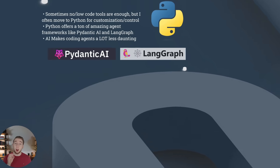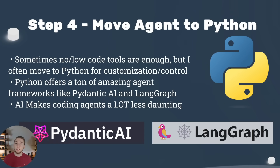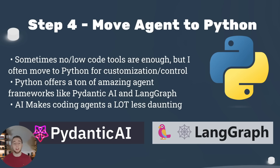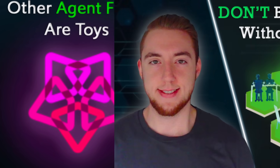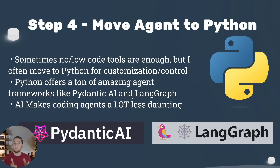After your database is set up, the next optional step is to move your agent to Python. No and low code platforms are sometimes actually enough to take your agents all the way to production, but a lot of times I feel like I really need to custom code my agents to get the customization and power I'm looking for — and that's when I'll move to Python. Python offers amazing agent frameworks like Pydantic AI and LangGraph, which pair very well together. And using AI IDEs like Windsurf or Cursor can make coding agents a lot less daunting, even if you're not very technical.